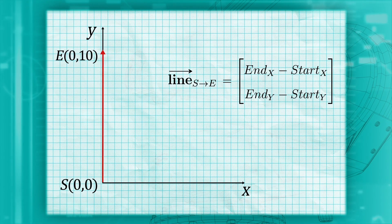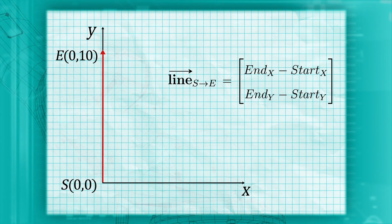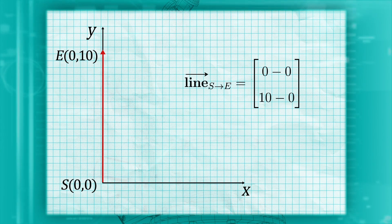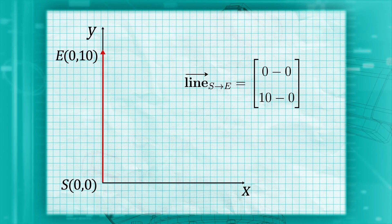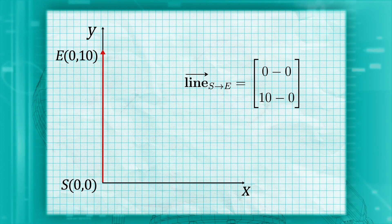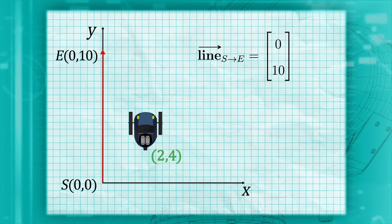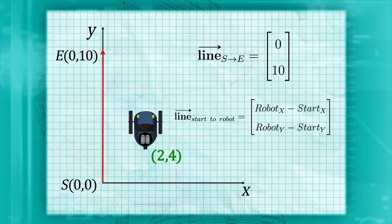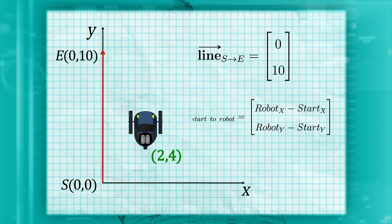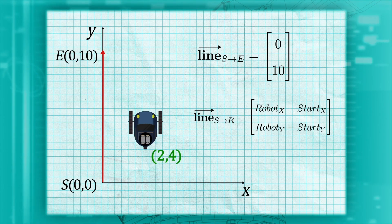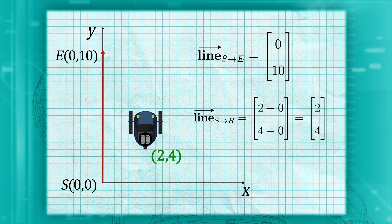Now we can use an easy method of determining which side of our line we are on. Imagine our line has its start at the origin and its end point at 0, 10. Then our line vector would have the first element as the difference in the x-coordinates, and the second element would have the difference in the y-coordinates. Simplifying, we get 0 over 10. Now imagine the robot is at 2, 4, and let's make a line from the trajectory start to our robot and put that line in the same format, using S to R for start to robot. And we get 2 over 4.